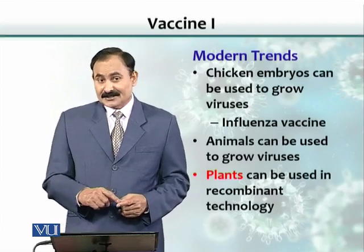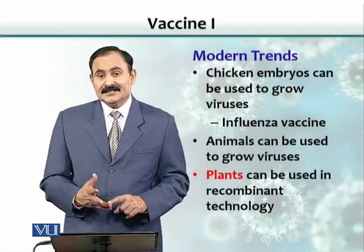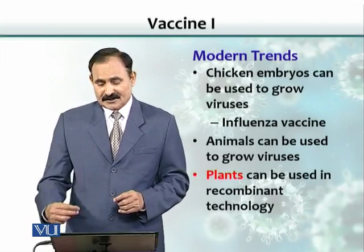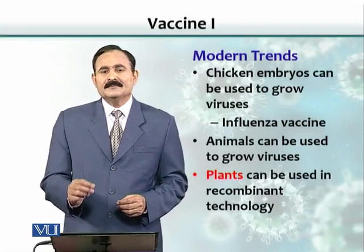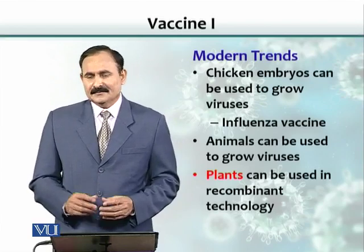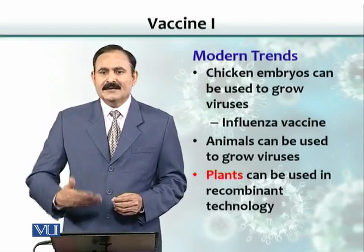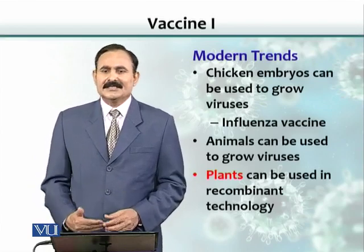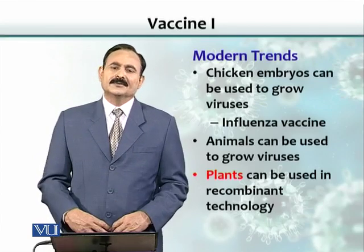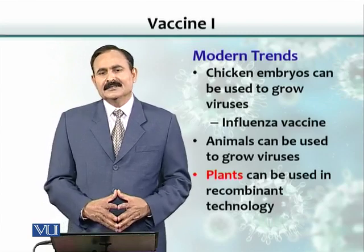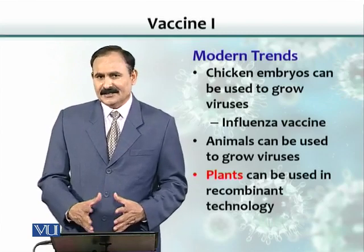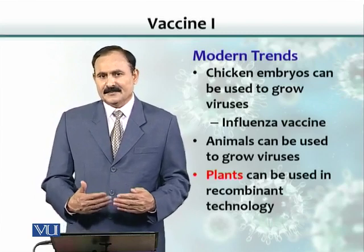The modern trend is to place the genes for capsid proteins and other antigens inside plants. As the plants grow, they produce those proteins, and if an animal eats those plants, the antigens are naturally absorbed through the gut. Although success in this area is not very good yet, people are still exploring these possibilities.